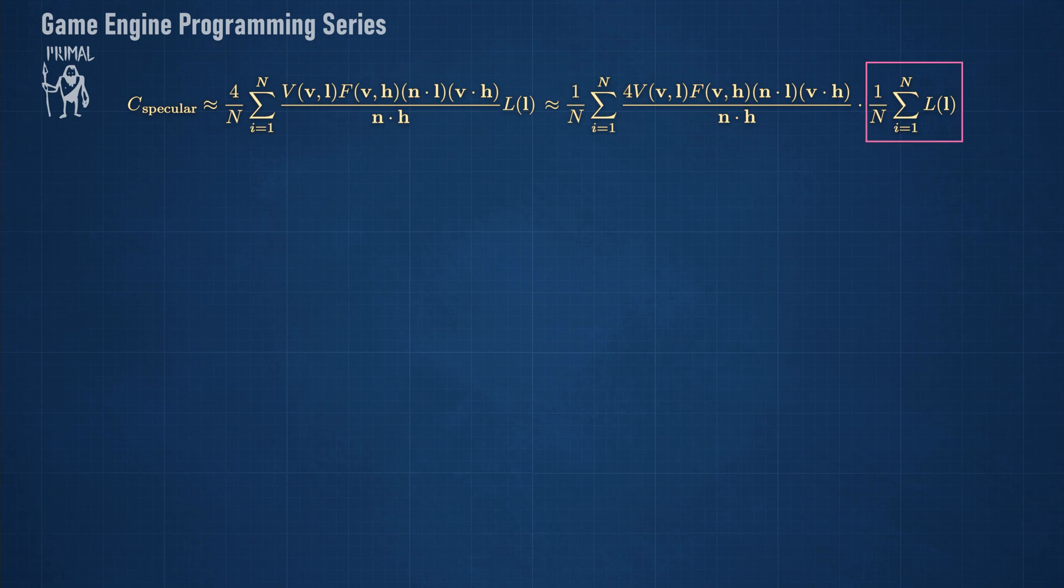Looking at the second part of the sum, we can see that this is really similar to what we did for the diffuse BRDF. It's just the average of sampled values on the hemisphere.